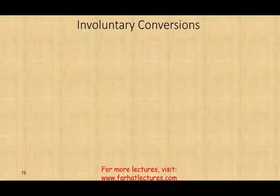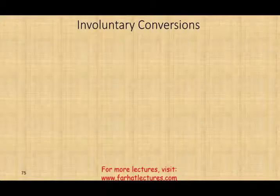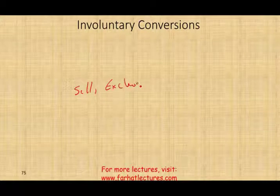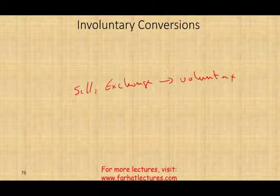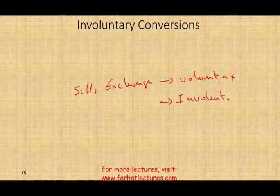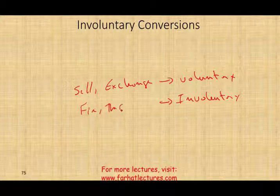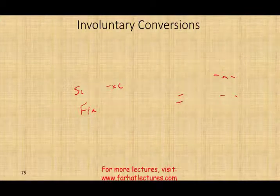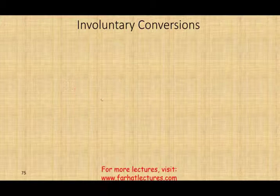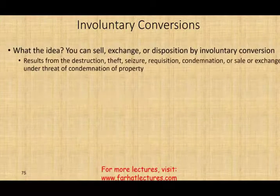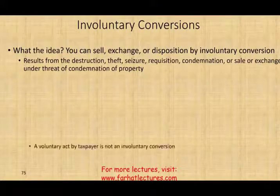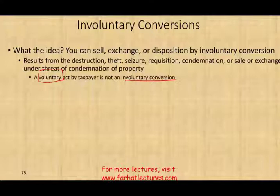Let's talk about involuntary conversion. When you have an asset, you can sell it or exchange it — those are voluntary exchanges. But what if you have an involuntary event? Examples include a fire, theft, an earthquake, or a condemnation by the government. Those are considered involuntary conversions, meaning you did not want to dispose of the asset but had to due to uncontrollable circumstances. An involuntary conversion cannot be a voluntary act by the taxpayer.